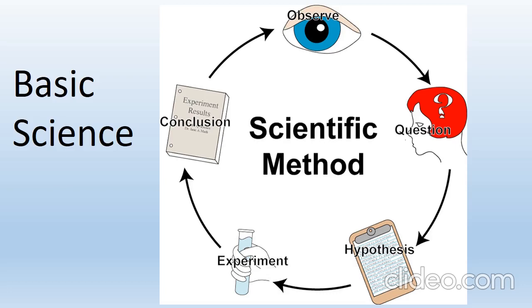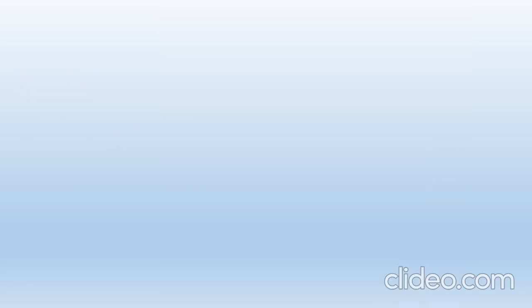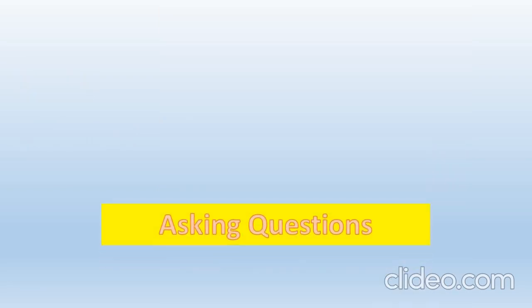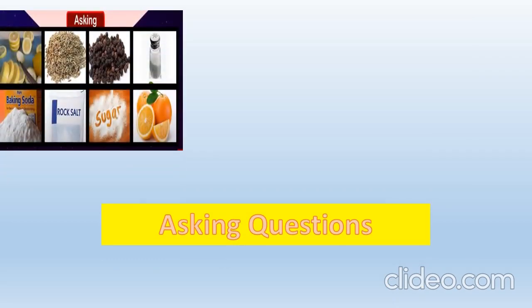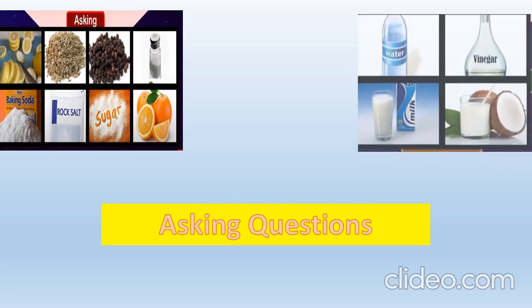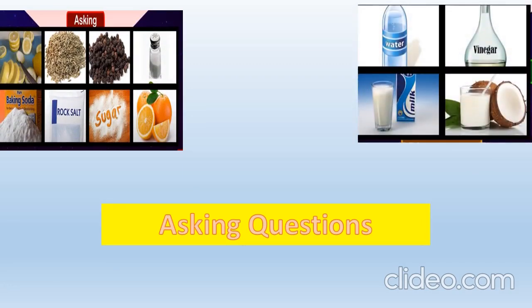Now I will show you this basic science cycle with an experiment of making lemon sherbet. The first thing is asking questions. So many questions are there in my mind — which ingredients should I use to make lemon sherbet? Which liquid should I use so that my ingredients are dissolved completely?